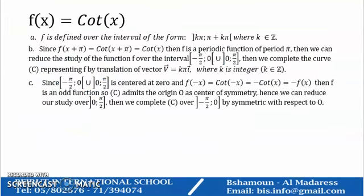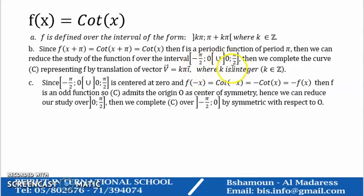First of all, we are going to start by f of x equal cotangent of x. This function is defined over the interval (kπ, π + kπ), where k belongs to ℤ. Since this is a periodic function, we can reduce that periodic function of period π, since cotangent of (π + x) equals cotangent of x. So we can reduce our work over the interval (−π/2, 0) ∪ (0, π/2).